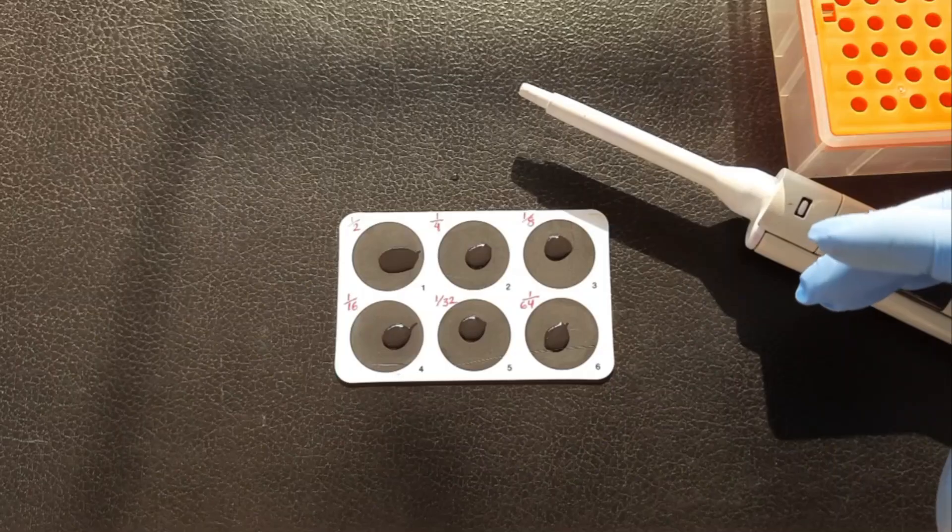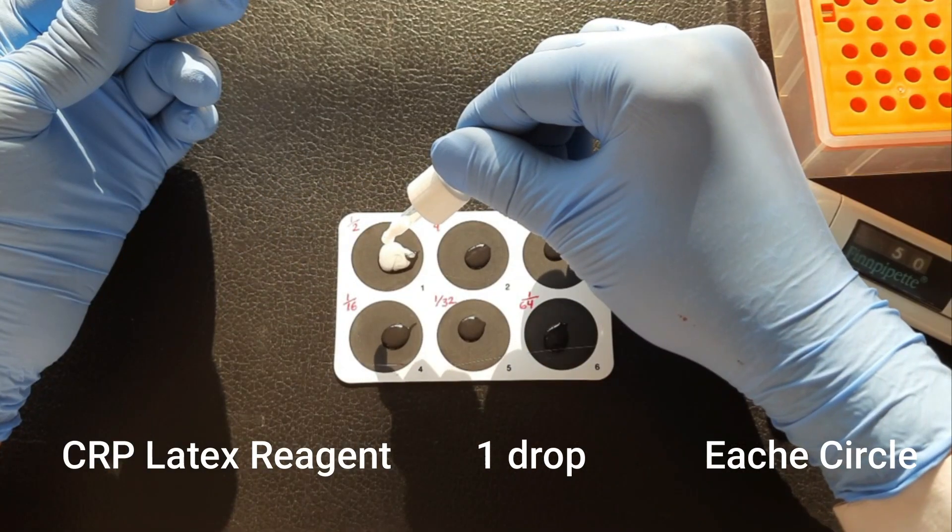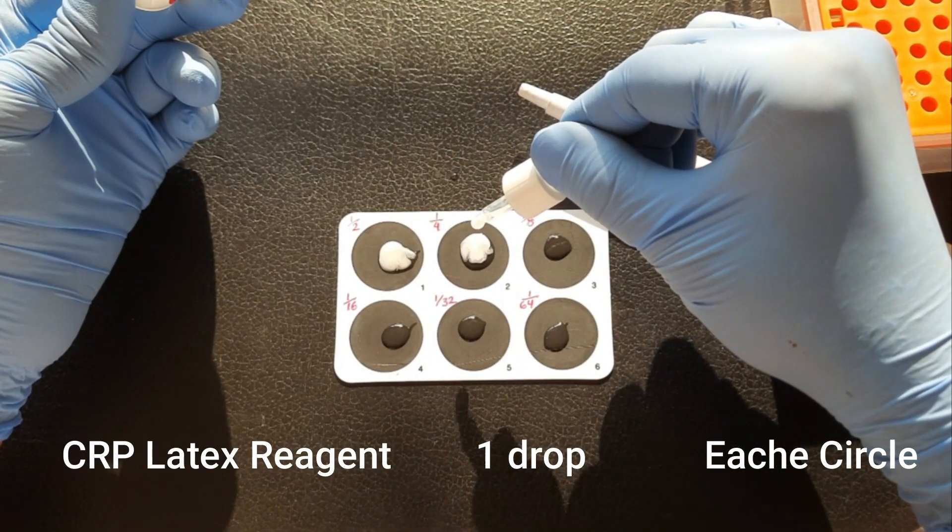Now, add 1 drop of 50 microliter of CRP latex reagent on each of the circle, from circle 1 to circle 6.